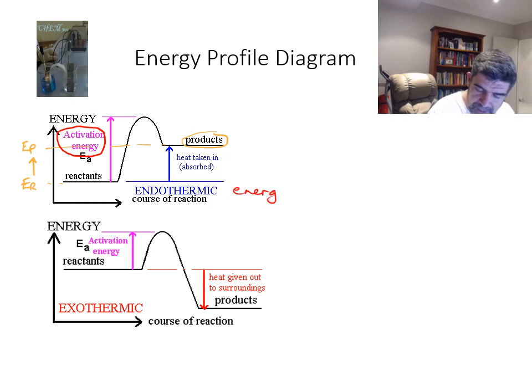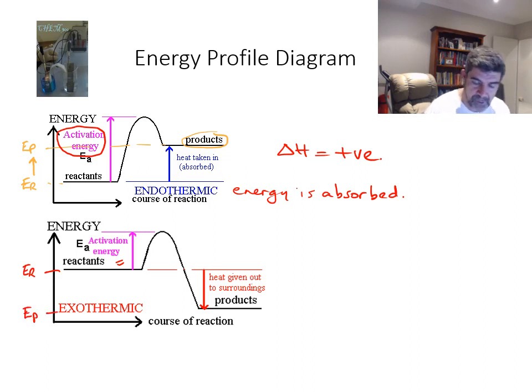For the one below, you can see what we've talked about before, the activation energy that's required. The energy of the reactants is now larger than the energy of the products. The products is less. And therefore what's happened to go from here to here is that we have a negative delta H value because energy is released.